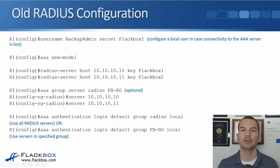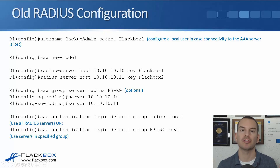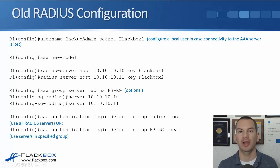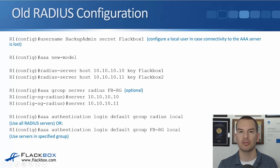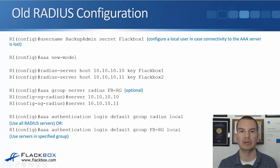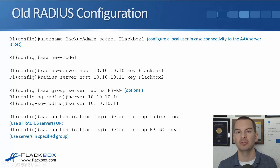In the last lecture, we covered the theory of AAA — authentication, authorization, and accounting. In this lecture, you'll see how to configure it. In the latest version of IOS, it's moved to a different command syntax for configuring AAA. But before this latest version, for a long time, it used the old way of doing it that you can see on the slide here. You'll still see this being used a lot in the field, so I'll cover the old configuration first. I'll show you the RADIUS config, then the TACACS+ config — they're both very similar.